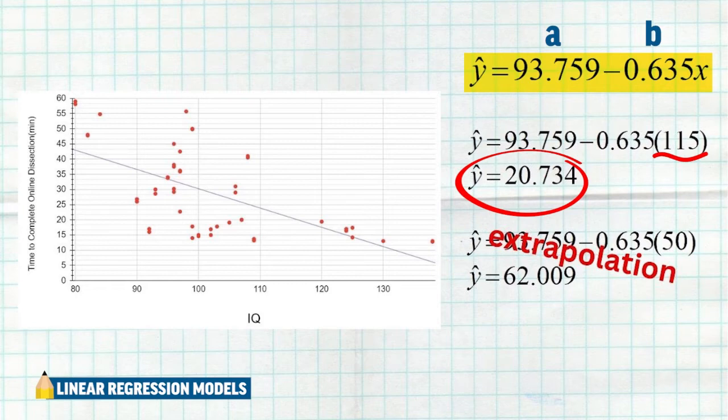Now, notice in this next example I wrote something over top of it called extrapolation. Extrapolation is trying to make predictions for data that's outside of your data range. So here I tried to input 50, and again, nothing was stopping me from plugging in 50. A student could certainly have an IQ of 50, and I could plug 50 in and I got a predicted value of about 62 minutes.